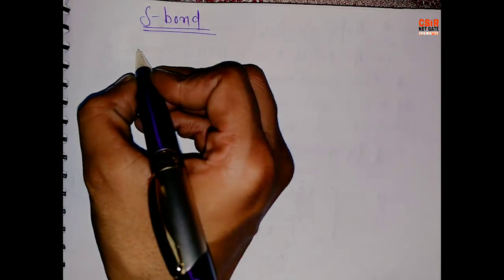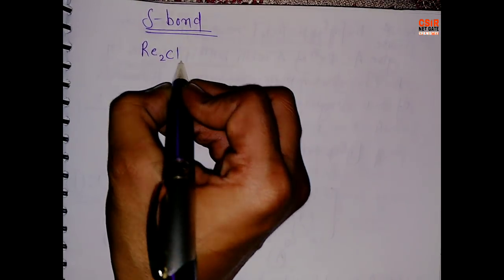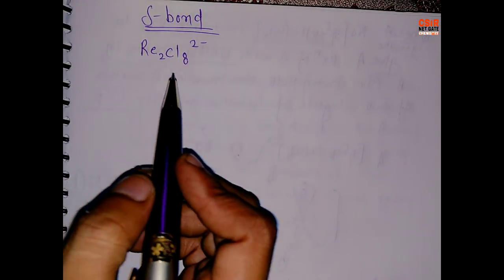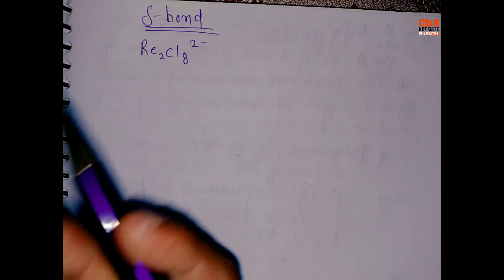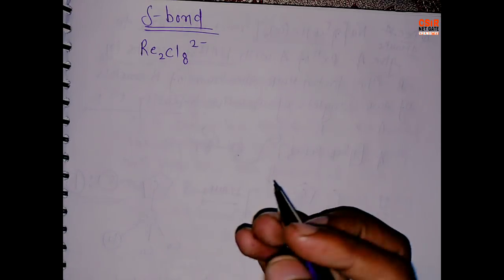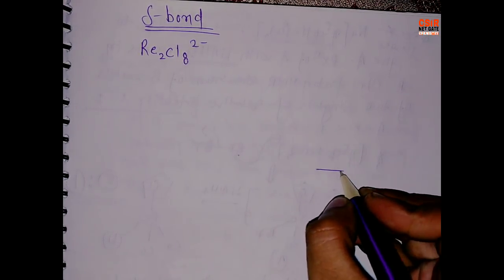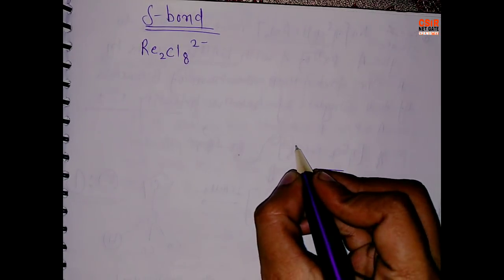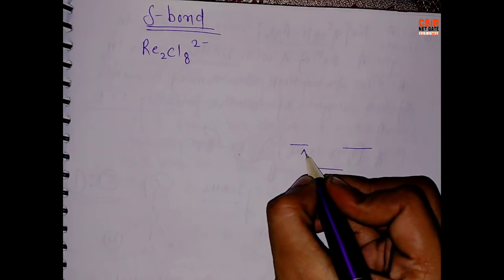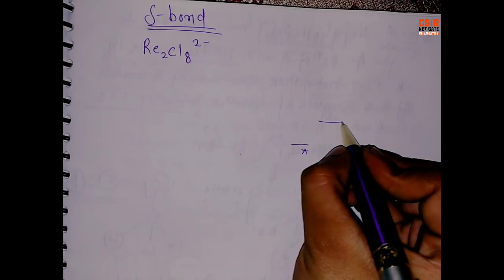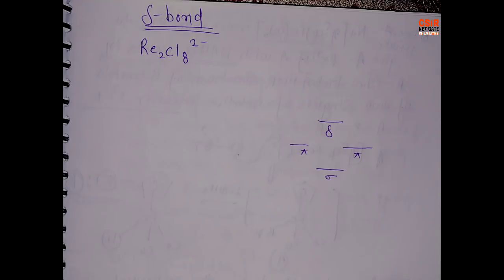The very first example is the very famous Re₂Cl₈²⁻. I have already made a video on this where I talked about the characteristics and properties of this compound. Now, to calculate the delta bond, you have to make a diagram: this is sigma, this is pi, and this is delta — this is the bonding part.